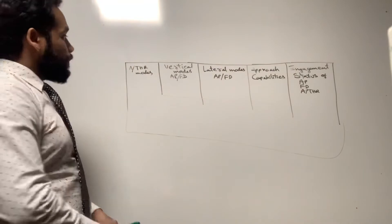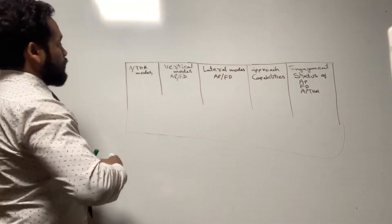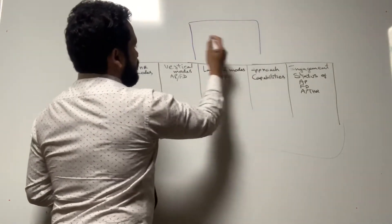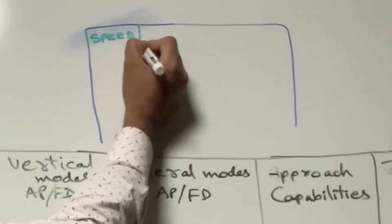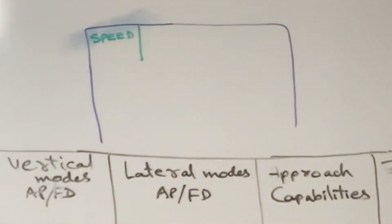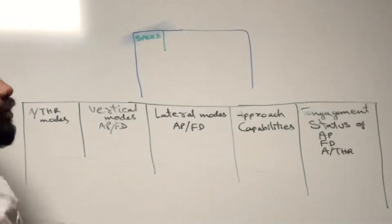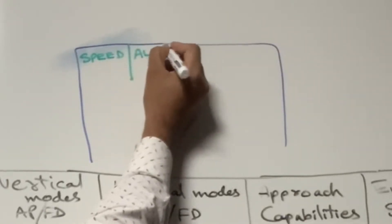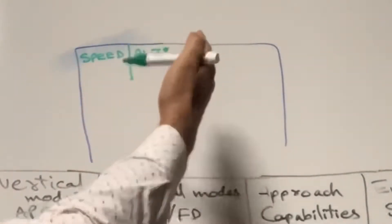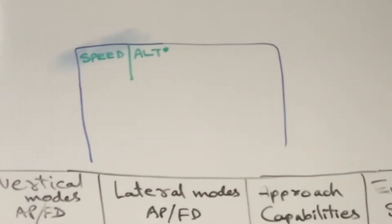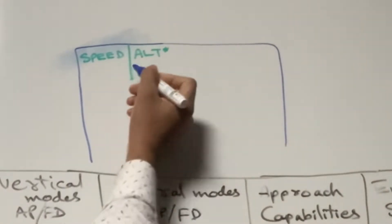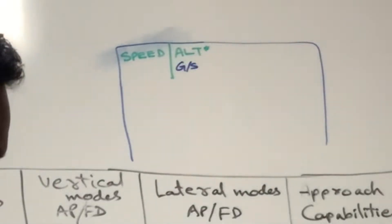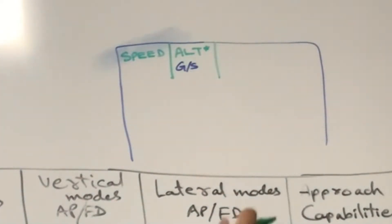Let me show you an example on the PFD. In the first column, suppose the autothrust mode is Speed — this is how it will appear. In the second column we have vertical mode; let me take it as ALT star. In this session I'm not discussing what these modes are about — I'll cover that in another session. The third column shows the lateral mode; suppose the lateral mode is Heading.